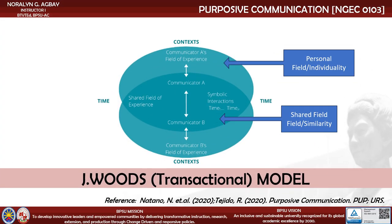Of all the kinds of models, the transactional model of communication is considered the most accurate representation of the communication process. Although interactive models recognize feedback and the cyclical process, they do not illustrate the dynamic and simultaneous nature of communication. Interactive models fail to account for the fact that both communicators can send and receive information at the same time. Julia Wood's model portrayed communication as a dynamic process that continually changes over time depending on previous interactions. For example, how you communicate with your parents, teachers, and peers is influenced by the history of those relationships.